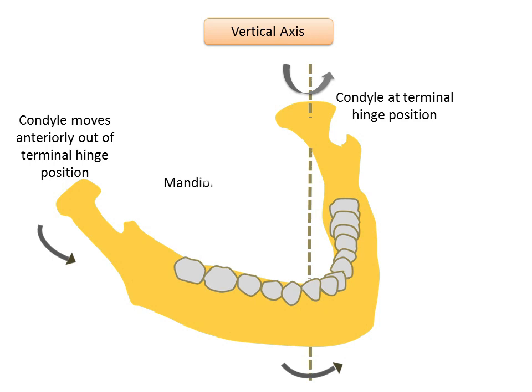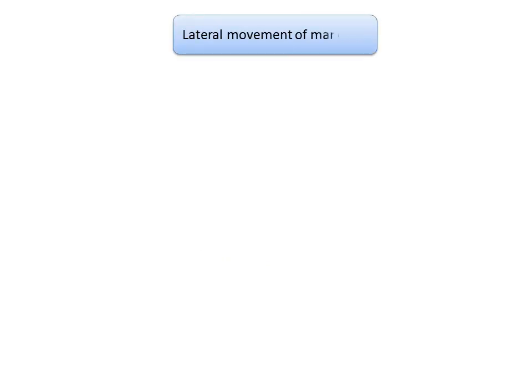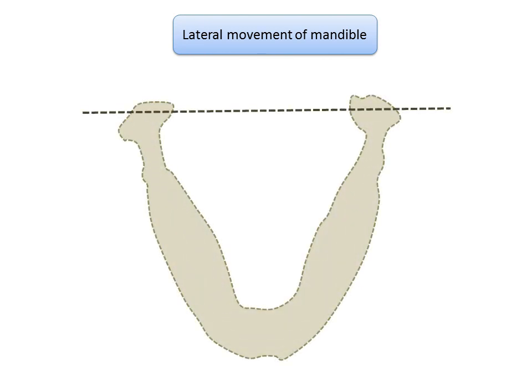If the patient moves the mandible towards the right, the vertical axis of rotation will pass through the right condyle, and vice versa. Lateral movement of the mandible is said to occur when the mandible moves away from the mid-sagittal plane. These movements can occur on the right or the left side. A basic concept to understand is that when the mandible moves laterally, the condyles on both sides do not share the same path of movement.